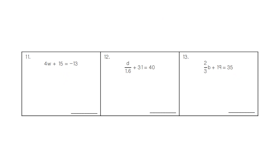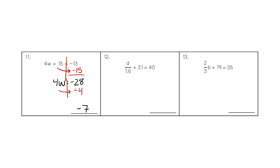For number 11, we draw the line down the equal sign. We do the opposite of plus 15 — we do minus 15. We have our 4W, and negative 13 minus 15 gives a value of negative 28. Our final step is to divide: negative 28 divided by 4 gives a final answer of negative 7.